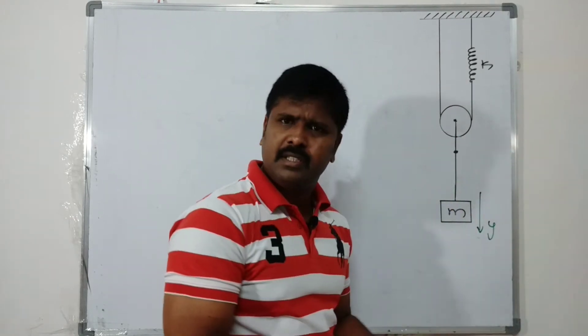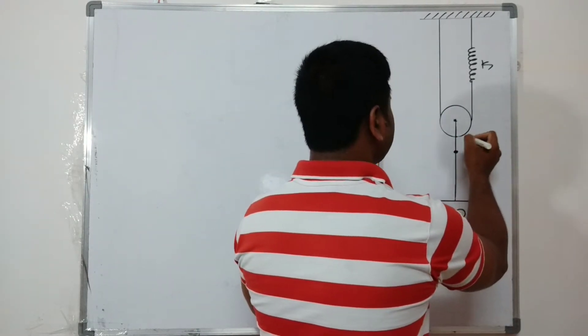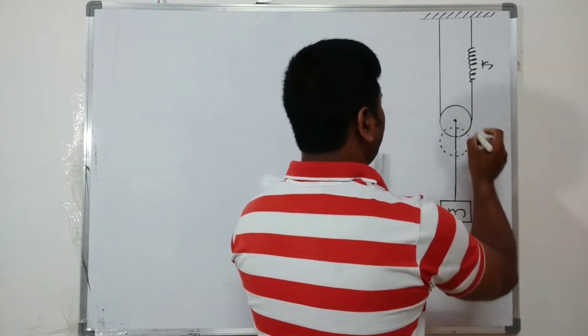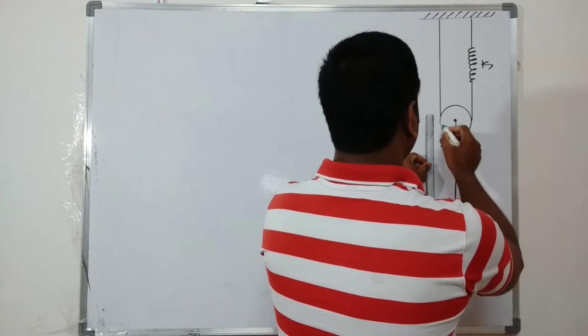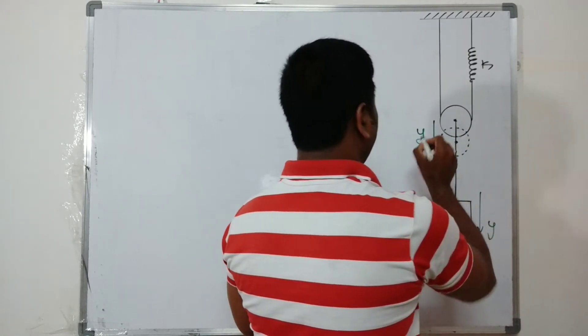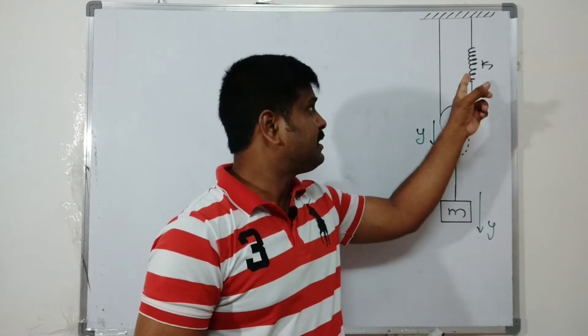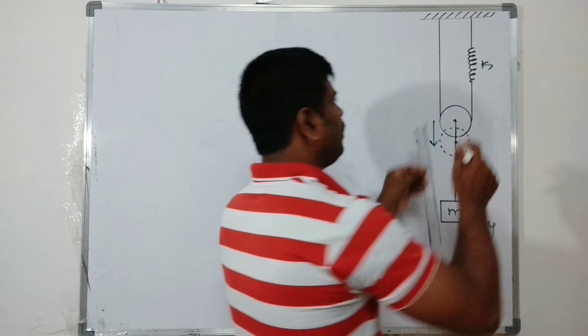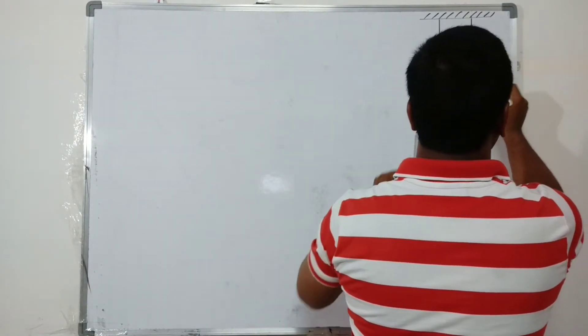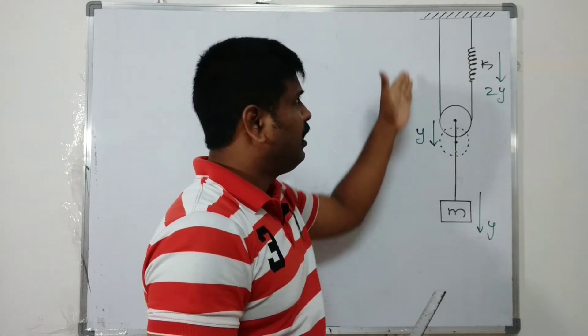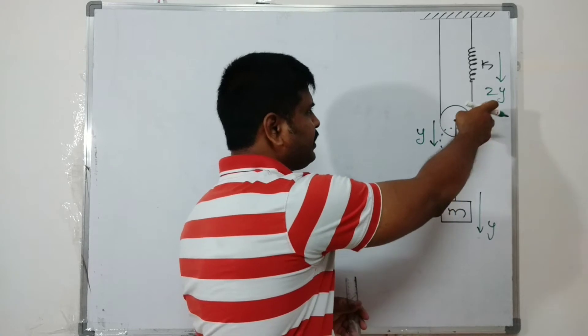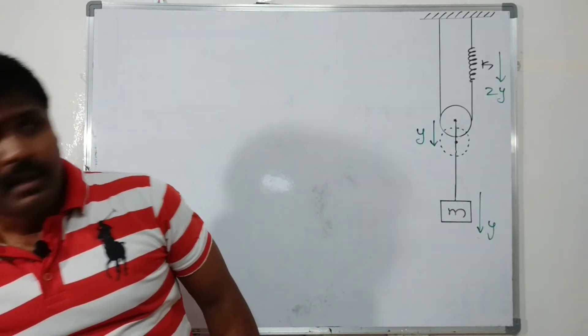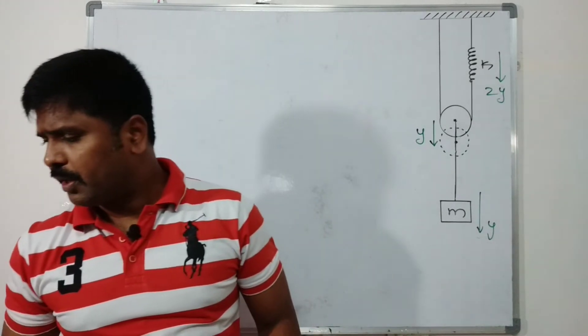When the block gets displacement y downward, the pulley also gets displacement y. So we can take the pulley displacement as y from the center. But the string extension is 2y because it's y plus y, both sides moving downward. So the spring gets stretched by 2y total.